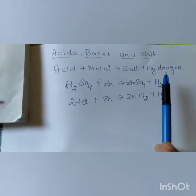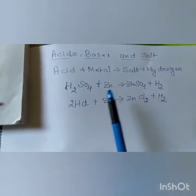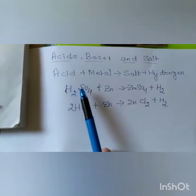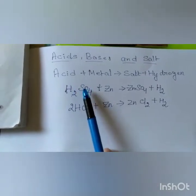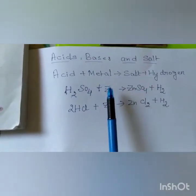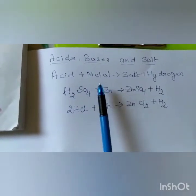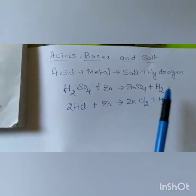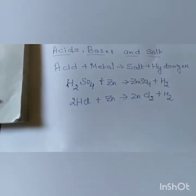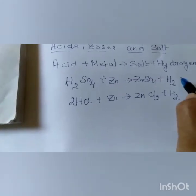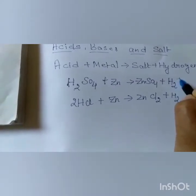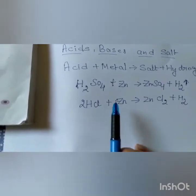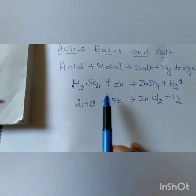Now if I write the equation: we have taken sulfuric acid — this is the acid — and in it we added zinc, the metal. Zinc sulfate is formed as the salt, and hydrogen gas is evolved. Since hydrogen is a gas, we show it with an upward arrow. Now see whether it is balanced: zinc is 1 on both sides, sulfur is 1 on both sides, oxygen is 4 on both sides, hydrogen is 2 on both sides — so this is balanced.